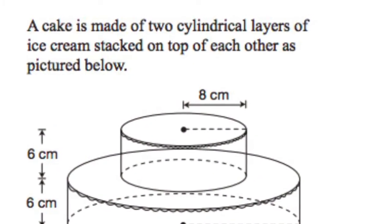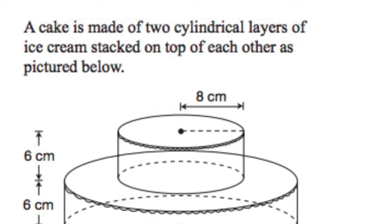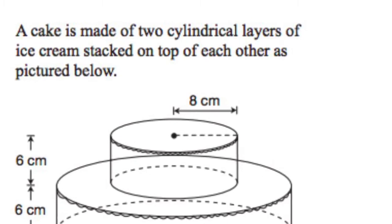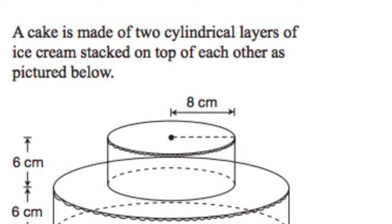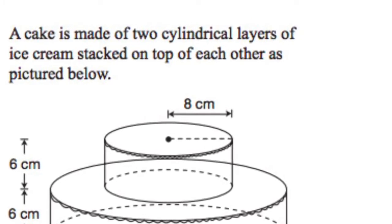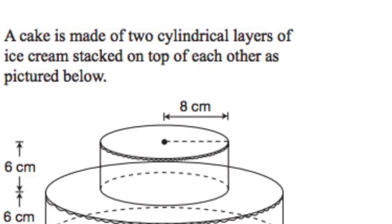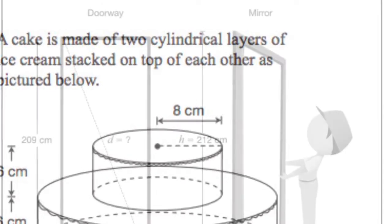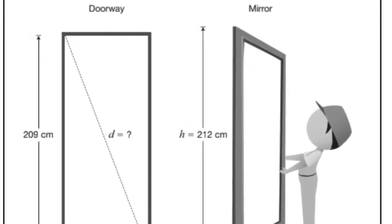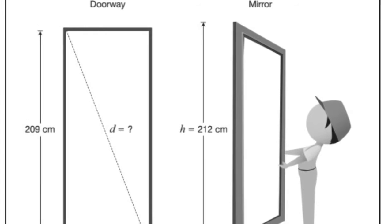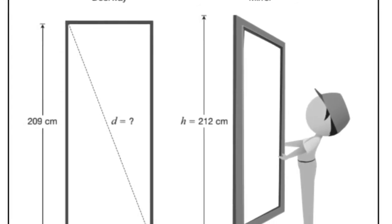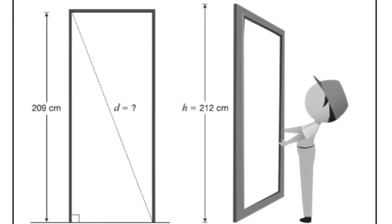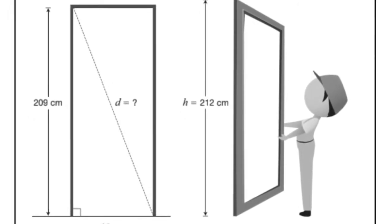So we're going to look at two questions from the summative. We're going to look at question number three, where you have to find the volume of the cake. The cake is made up of two cylinders, so we need to find the volume of both shapes and add them together. And then we'll look at the last question from the summative, where we have to find the diagonal length of the door using Pythagorean theorem. We learned both of these topics at Gloucester High School, but maybe you've forgotten them, so I hope this video will remind you of what you already know.